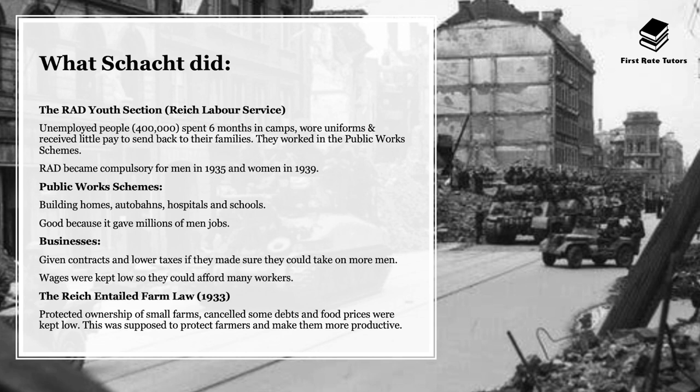This is tied into the public works schemes. Hitler implemented the intention of building new homes, constructing autobahns — the vast railways and highways — as well as hospitals and schools. This gave millions of people jobs, especially millions of men. Lots of businesses were given contracts and taxes were lowered if they took on more men as employees. Hitler also agreed with businesses that they could keep wages fairly low so they could afford to take on many workers.